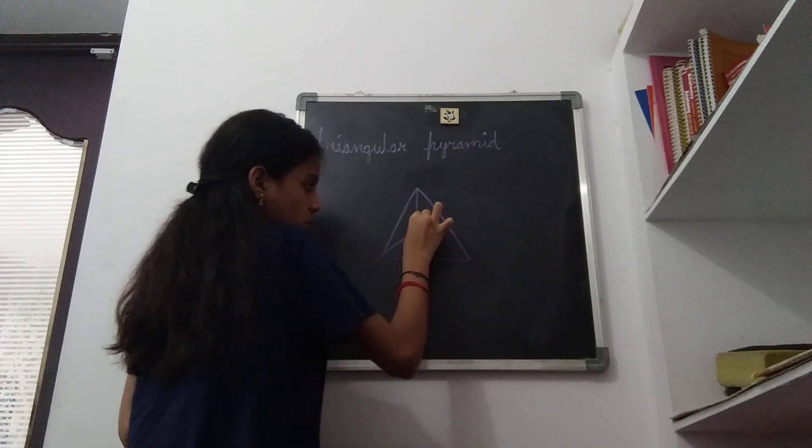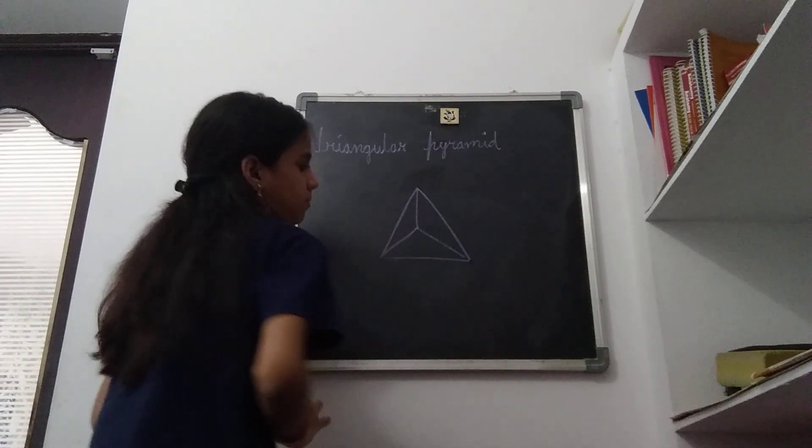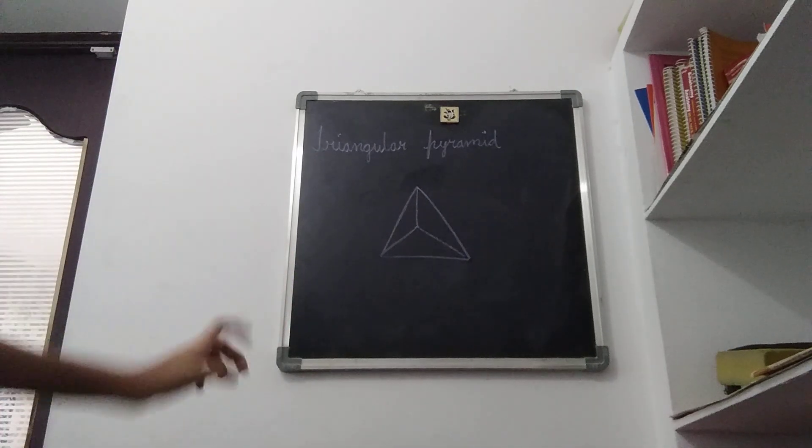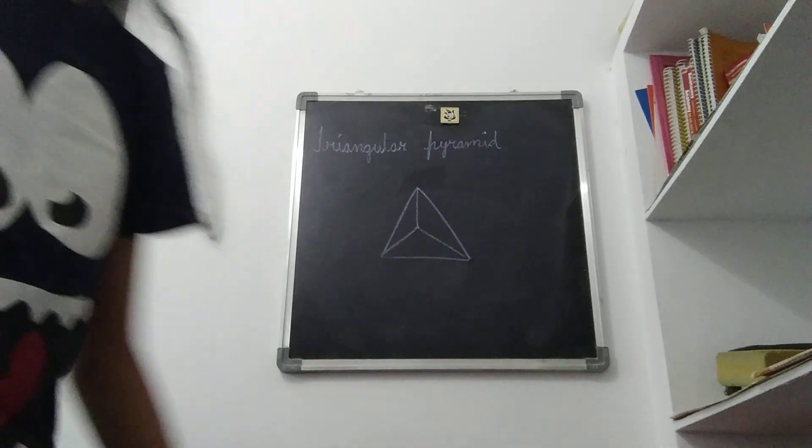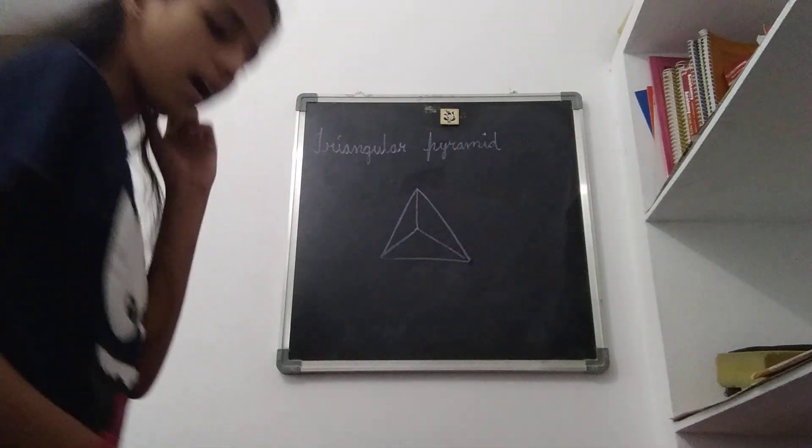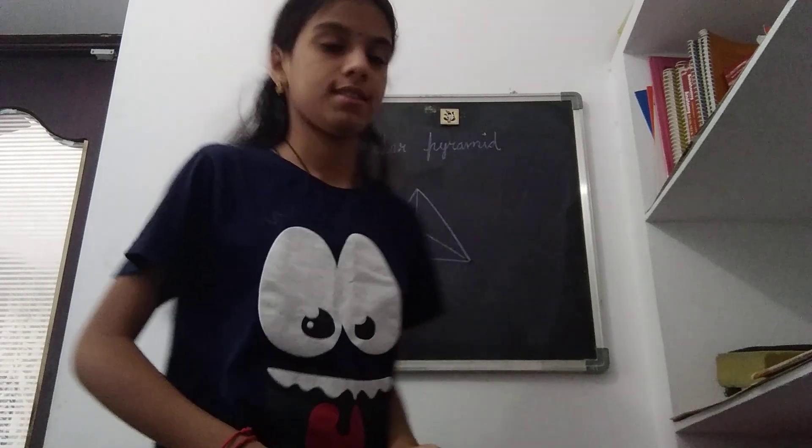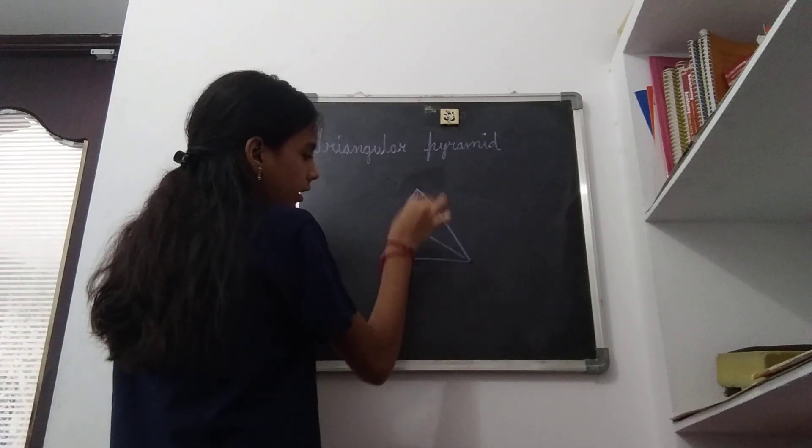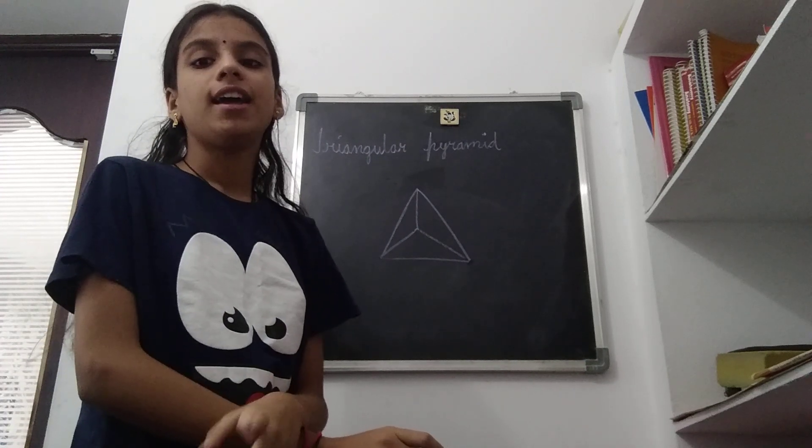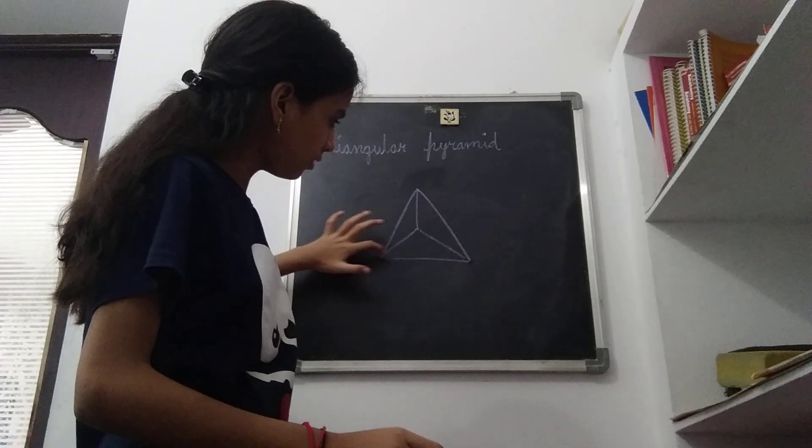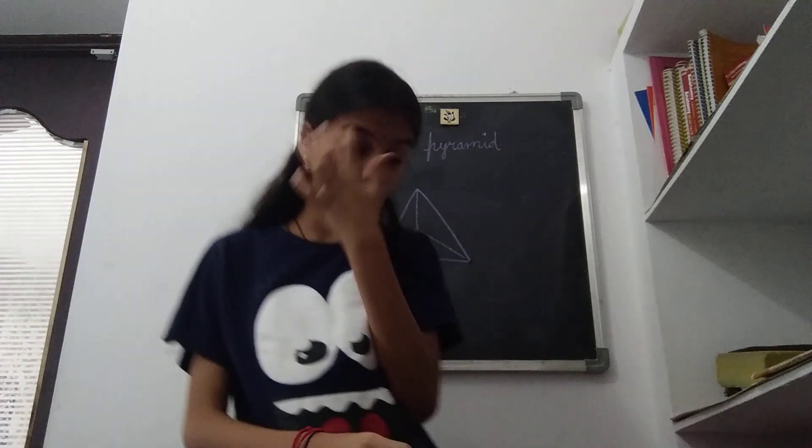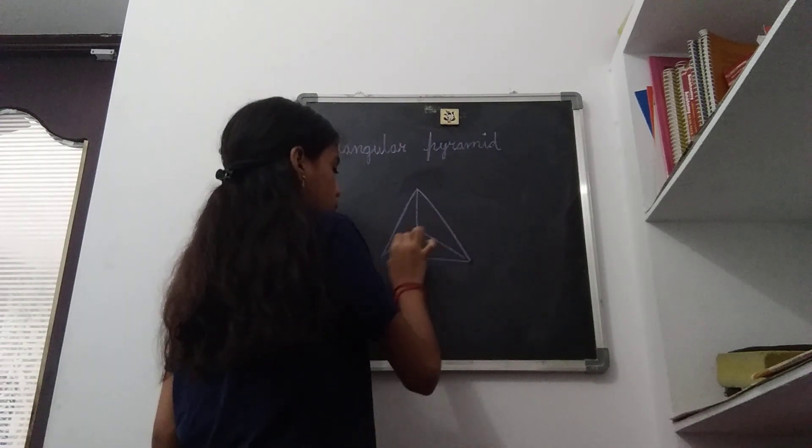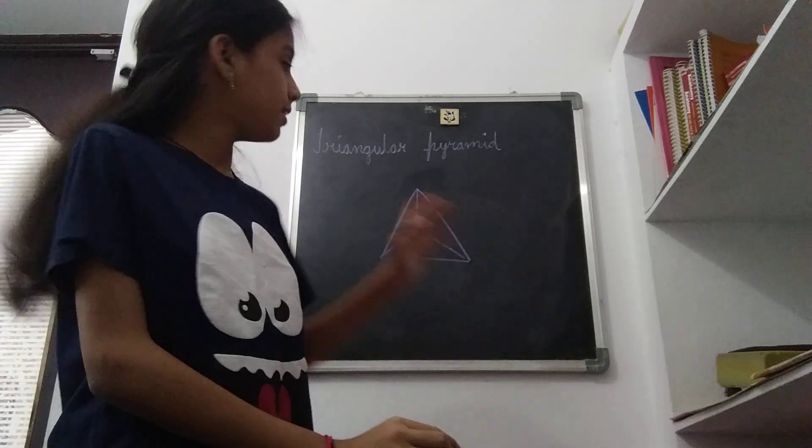This is a triangular pyramid. Let me show you closer. Triangular pyramid has four faces - one, two, three, and back is four. It has six edges - one, two, three, four, five, six. It has four vertices - one, two, three, four vertices.